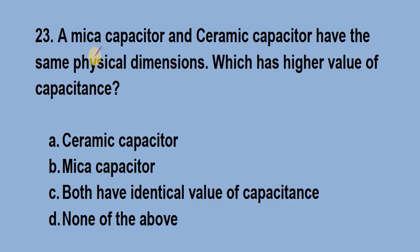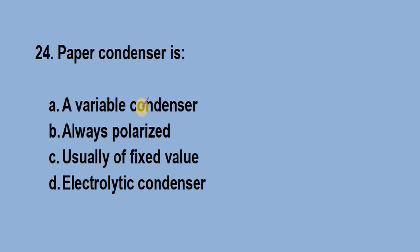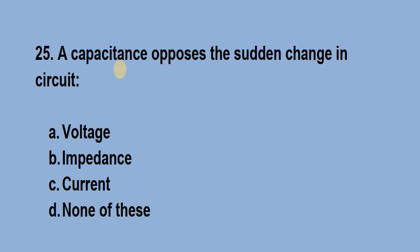Question number 23: A mica capacitor and ceramic capacitor have the same physical dimensions, which has higher value of capacitance? Answer is option A, ceramic capacitor. Question number 24: Paper condenser is? Answer is option C, usually of fixed value. Question number 25: A capacitance opposes the sudden change in circuit? Answer is option A, voltage.